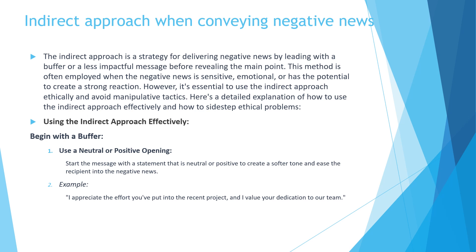Now let's look at the indirect approach when conveying negative news. The indirect approach involves cushioning the impact of the message by starting with a buffer or less impactful statement before revealing the main point. This method is particularly used when the news is sensitive or could provoke a strong emotional reaction.